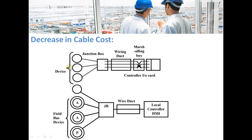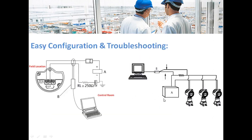Fieldbus devices decrease cable cost. In a 4-20mA system, a separate cable needs to be routed to the control room for each device. Whereas with fieldbus, devices can be connected in bus or star topology, and a single cable goes from the junction box to the control room.